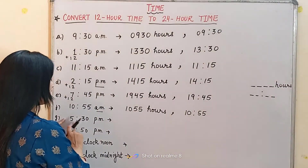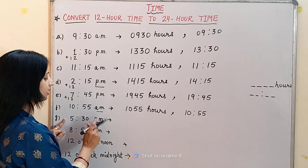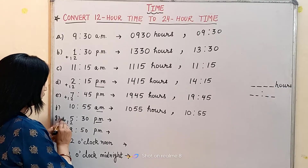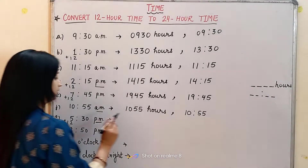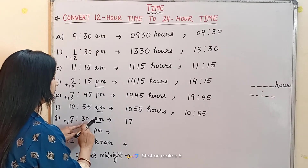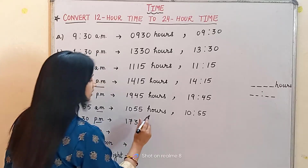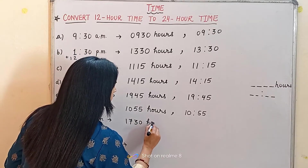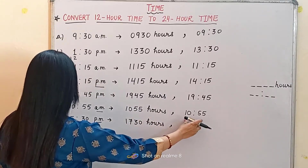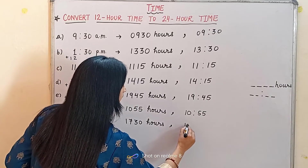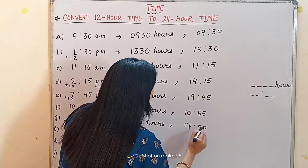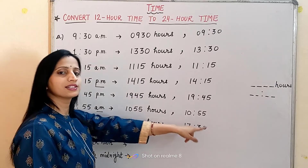The next example is 5:30 PM. It is PM again, so we will add 12. 5 plus 12 is 17, so we write 1730 hours. In the colon form, we write 17, put the colon, and write 30. So it is 17 hours 30 minutes.